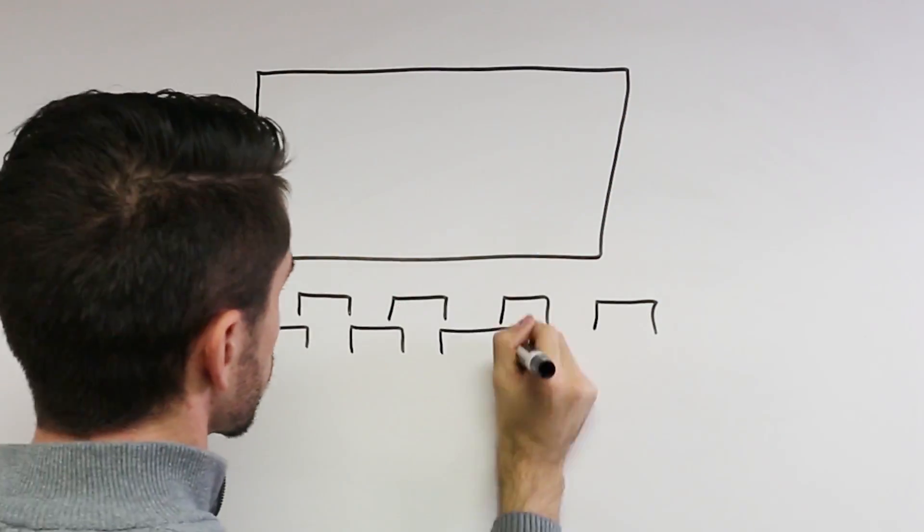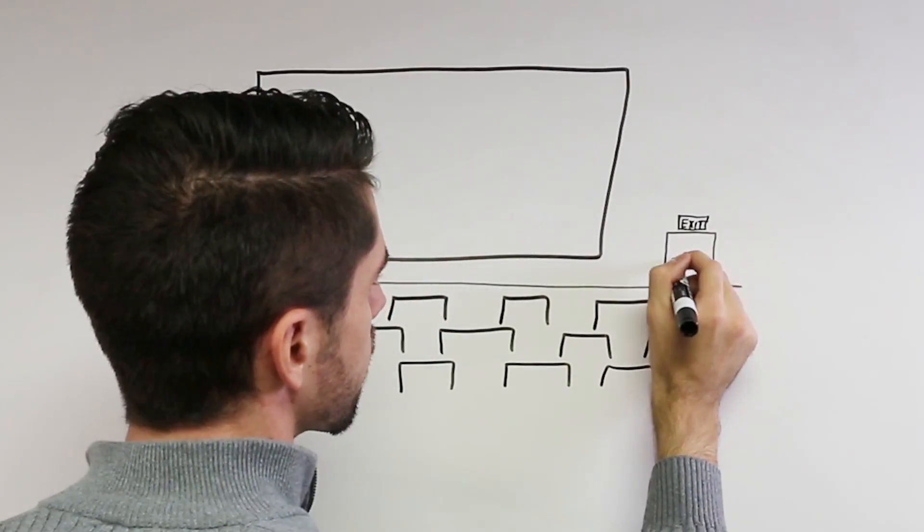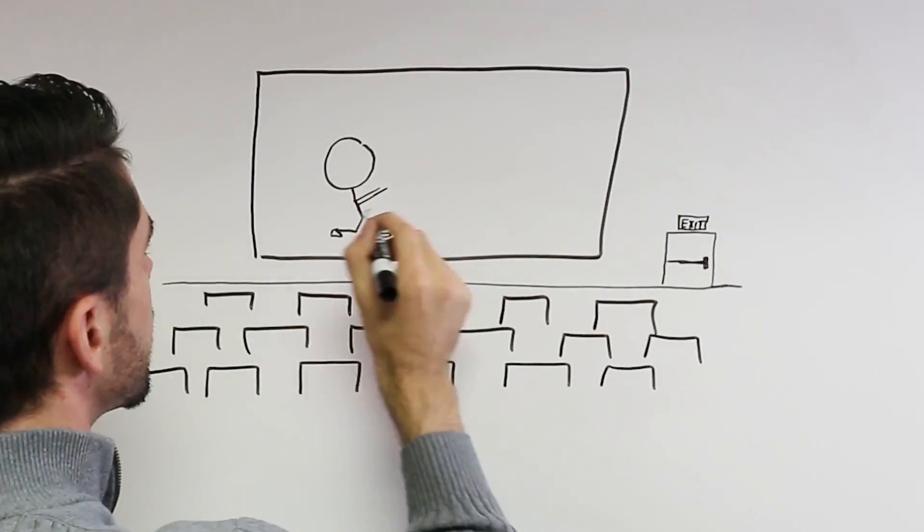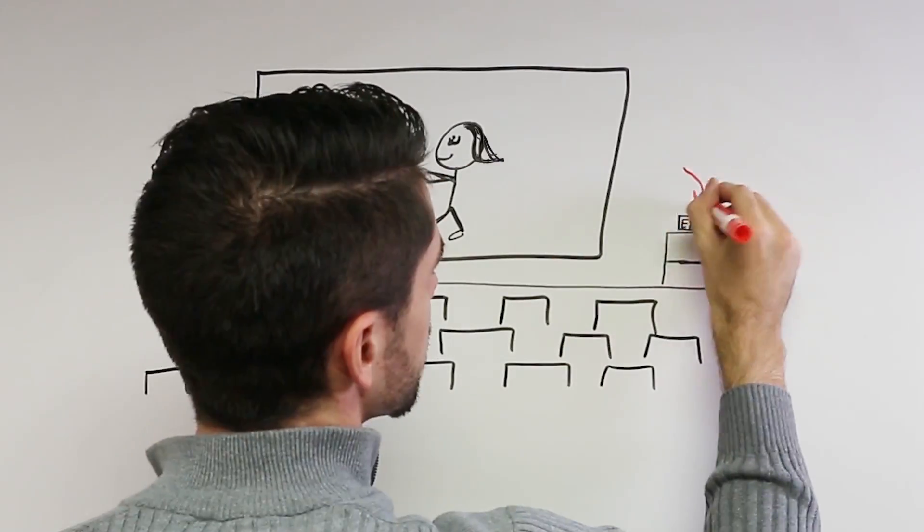My favorite comment about exit hardware is in the form of a piece of advice: always note where the nearest exits are. For example, at a movie theater, make a mental note when you enter how you would exit in an emergency.